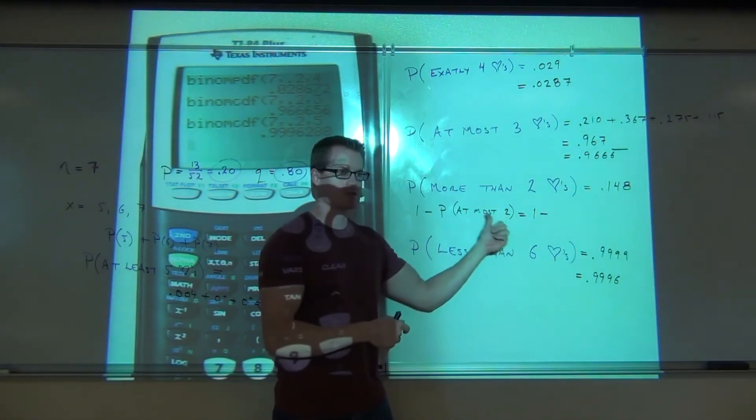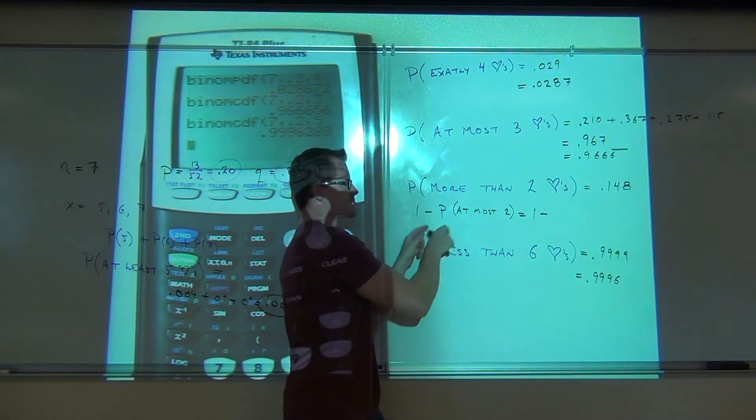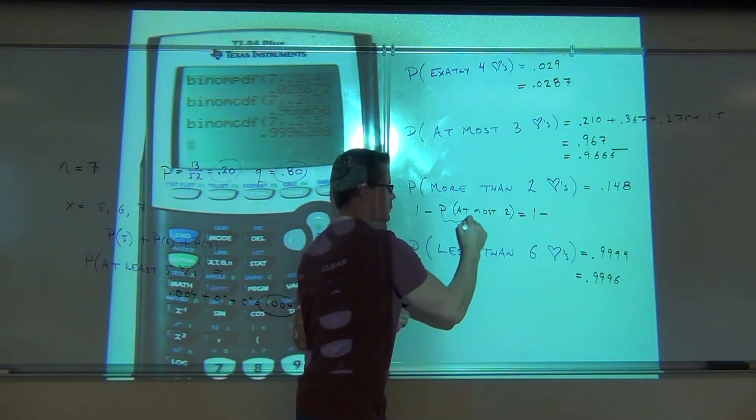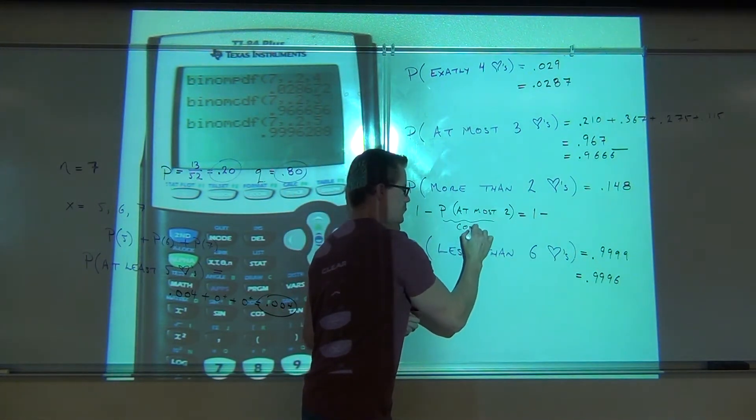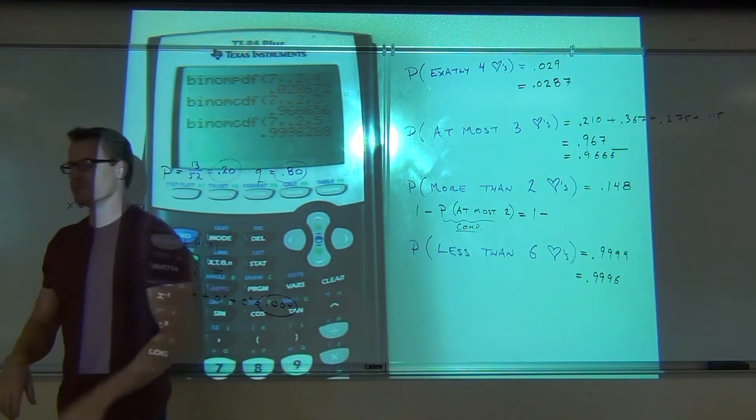Seven or zero one two - those things are complements. Instead of going for this one directly in your calculator, you got to take one minus the complement. This would be our complement here. So let's look for at most two.